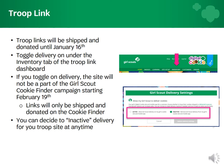Troop links will be shipped and donated only until after starting orders are submitted. Your troop can select to turn on delivery for their troop link at that time. This is done under the inventory tab of the troop link dashboard. If delivery is toggled on, the troop link will not be a part of the national troop link campaign with the cookie finder starting on February 19th. You can toggle off delivery at that time to be a part of the troop link campaign.